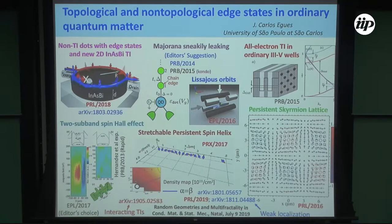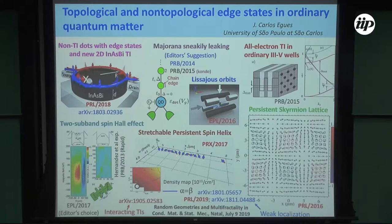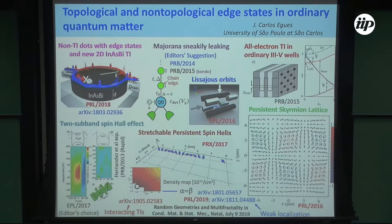I mention this paper in particular because in 2017 I spent six months here at the Natal on sabbatical — that's when I got to know many people around here, particularly Aras. My student was also here; this is work of a PhD student of mine. What we essentially showed is that a quantum dot, topological or not, will have edge states. There's also a very nice paper where we couple a dot to a Kitaev chain and see leaking of the Majorana mode into a quantum dot.